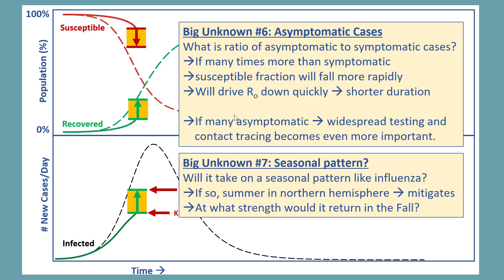The last big unknown is whether COVID-19 will take on a seasonal pattern like influenza. If so, summer in the northern hemisphere will see a drop in the cases. However, what remains unknown is if that happens, at what strength would it return in the fall?